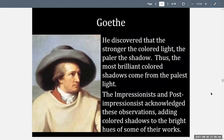Goethe discovered that the stronger the colored light, the paler the shadow. Thus, the most brilliant colored shadows come from the palest light. The Impressionists and Post-Impressionists acknowledged these observations, adding colored shadows to the bright hues of some of their works.